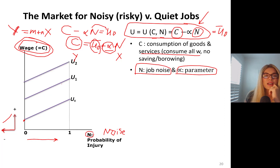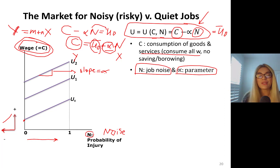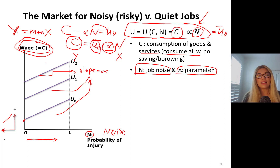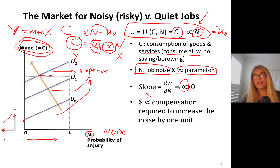U1 is a higher utility level, U2 is a higher utility level still. Alpha is constant, so the slope of all these indifference curves — which we call indifference curves in economics (ISO means equal utility) — is alpha, and they all have the same positive slope. So all these indifference curves represent the same person's preference map. The slope being alpha means you need alpha dollars of additional compensation to accept one more unit of noise.